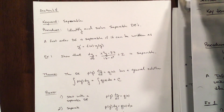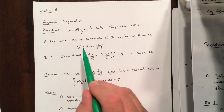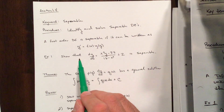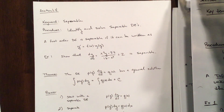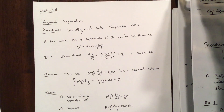So what is separable? A first-order differential equation is separable if it can be written as y prime equals f of x times g of y — a product of two functions, one function entirely dependent on x, the other function entirely dependent on y.